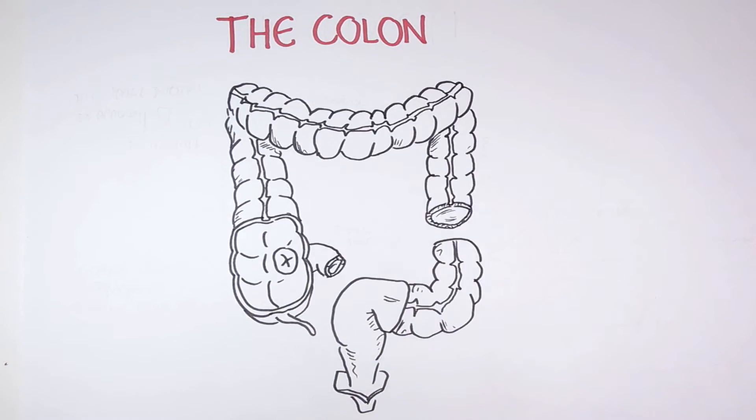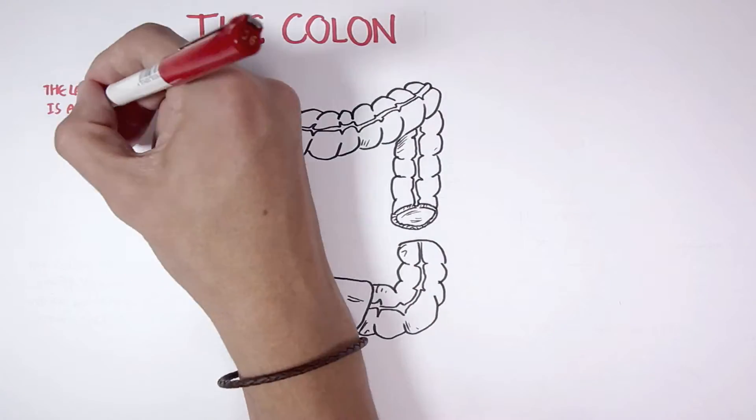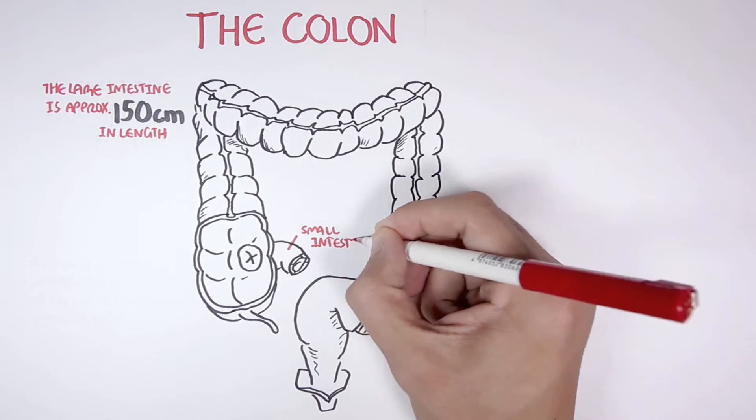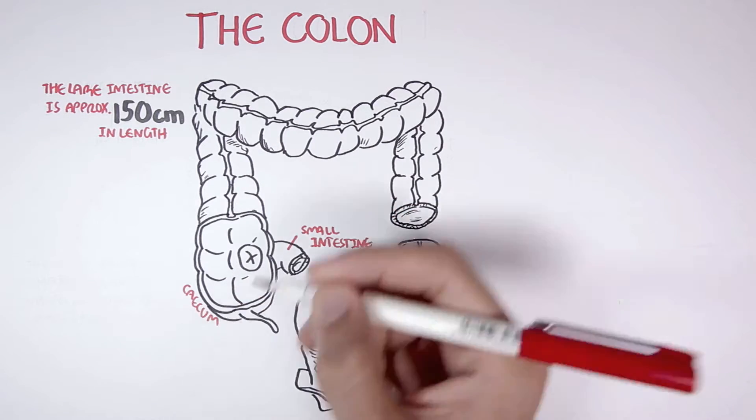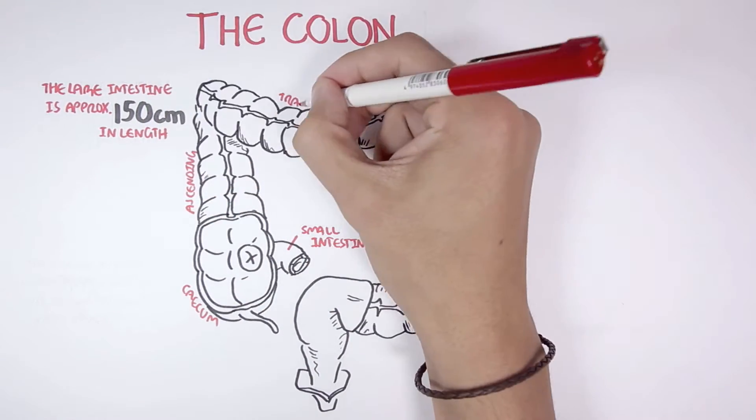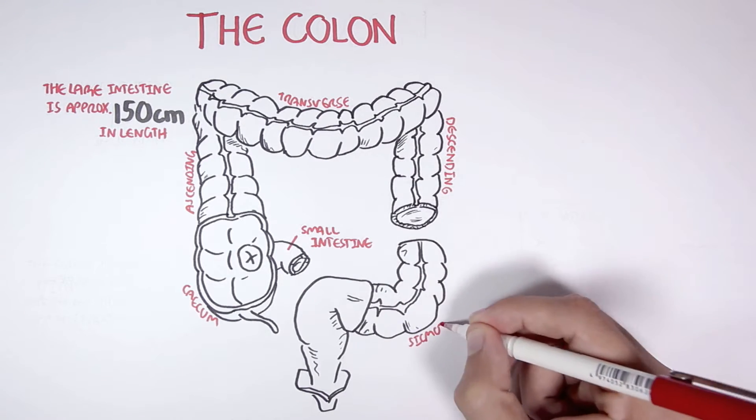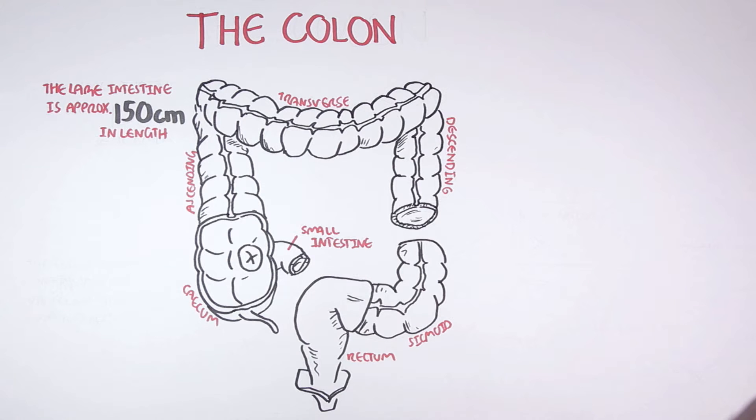The colon or large intestine is approximately 150 centimeters in length. It is divided into a few sections. The small intestine will join to the first part of the large intestine known as the cecum. Then there is the ascending colon, the transverse colon, descending colon, sigmoid colon, and finally the rectum.